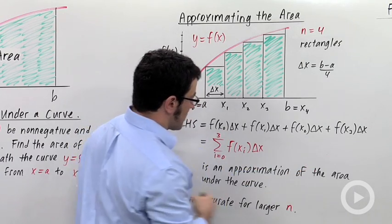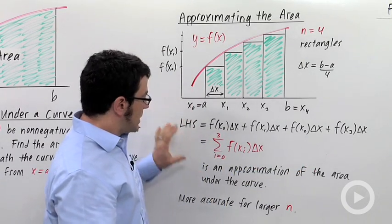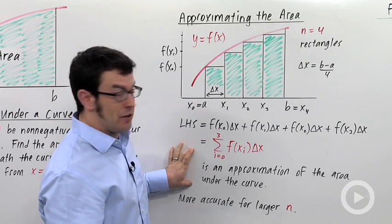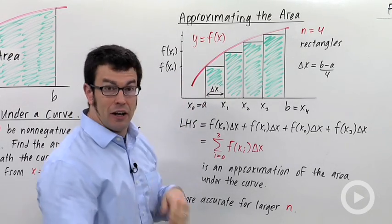That represents these numbers here. This is the left-hand sum, and it's an approximation of the area under the curve. And as you can see, this left-hand sum gives me an underestimate.